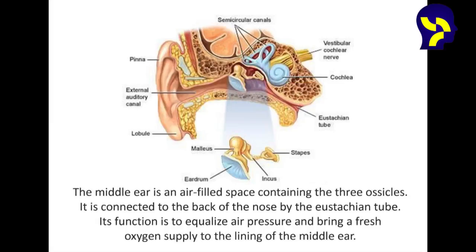Behind your eardrum is the middle ear. It is an air-filled space which contains the three smallest bones in your body. These bones are called the ossicles. The three ossicles are the hammer or the malleus, the anvil or the incus, and the stirrup or the stapes. The middle ear space is connected to the back of the nose via the eustachian tube.